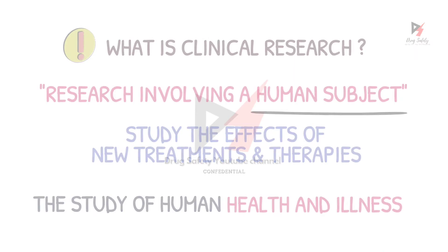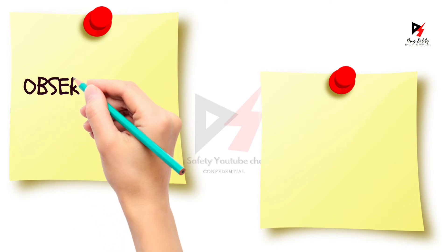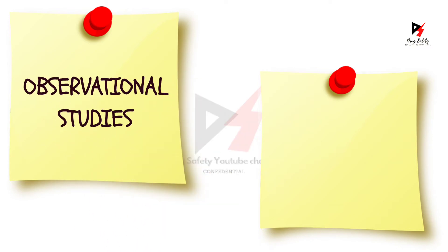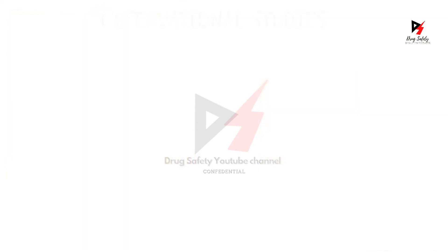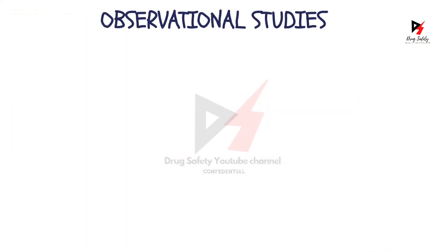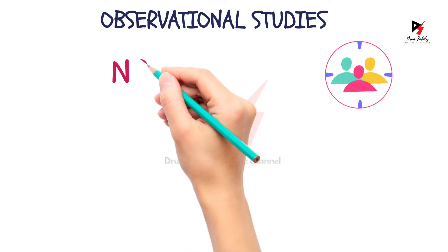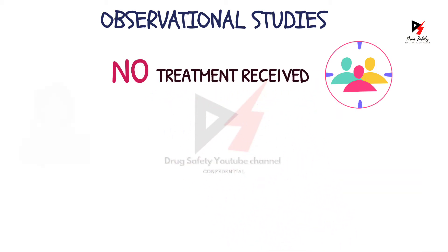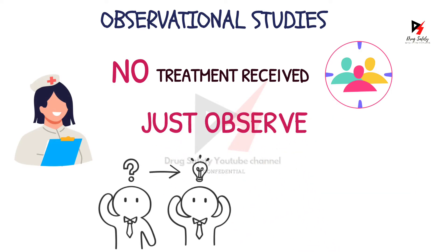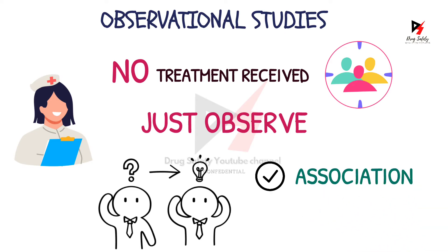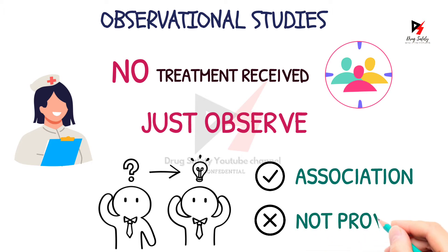Clinical research is generally divided into two types. The first type is observational studies and the second type is clinical trials. In observational studies, participants of the study are not subjected to receive any new treatments or experimental procedures. The researchers in observational studies just observe and, based on their observations, they develop a hypothesis. Observational studies can discover associations between things but cannot prove that one thing causes another.